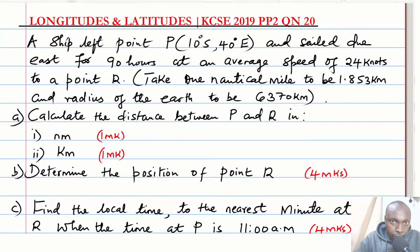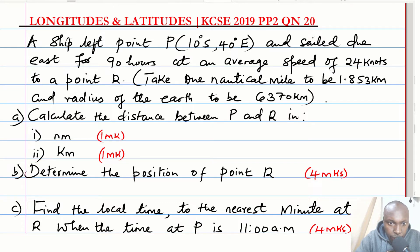Hello everyone, welcome to the lesson on Longitudes and Latitudes, KCC 2019 Paper 2, question number 20. The question reads: A ship left point P at 10 degrees south, 40 degrees east, and sailed due east for 90 hours at an average speed of 24 knots to a point R. Take 1 nautical mile to be 1.853 kilometers and the radius of the earth to be 6370 kilometers.